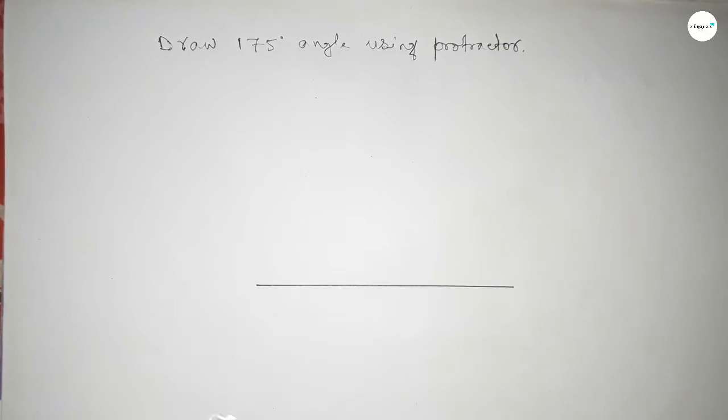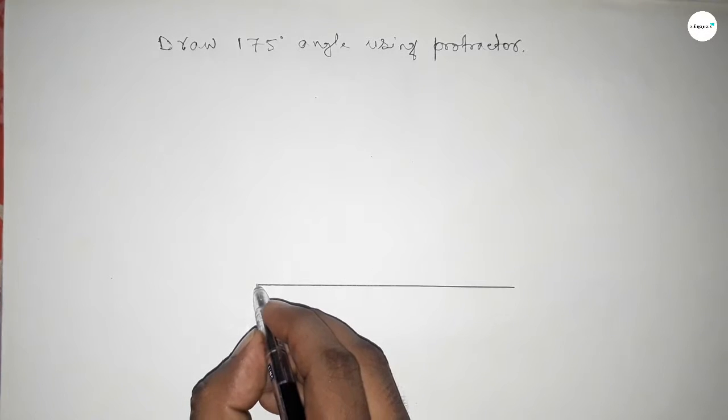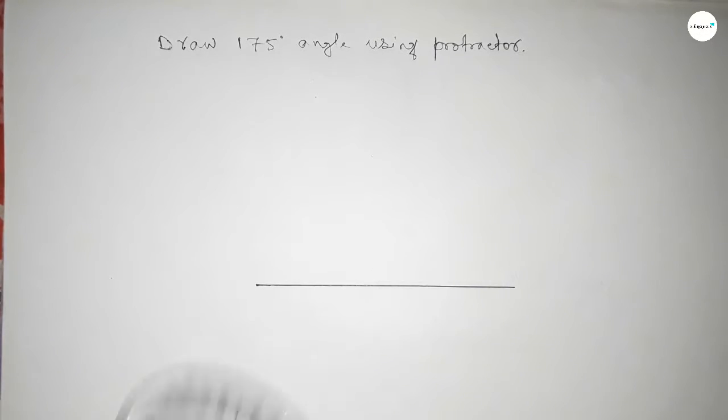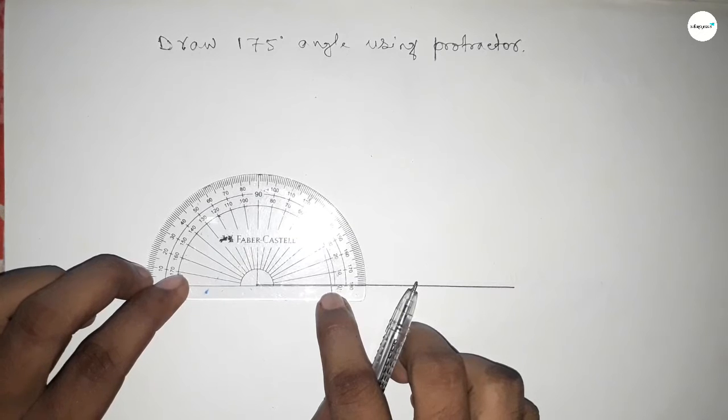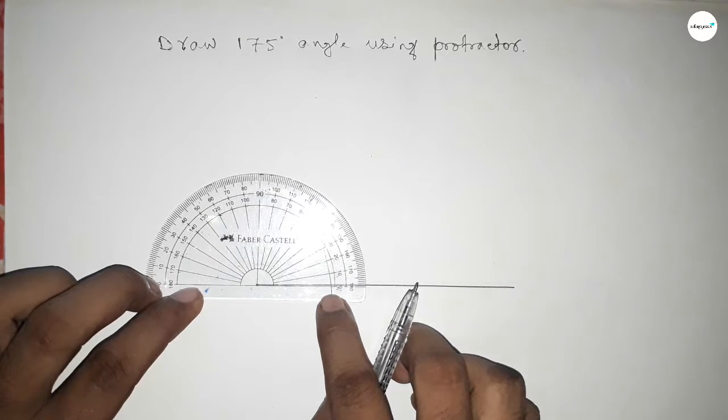Drawing a line here. Next, pointing here to draw 175 degrees. Now putting the protractor on the line perfectly to count the angle.